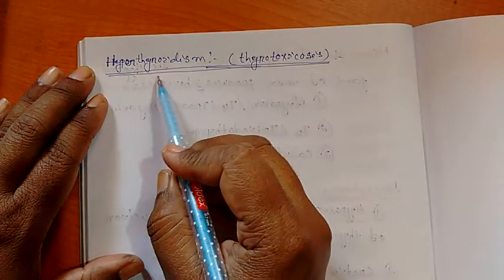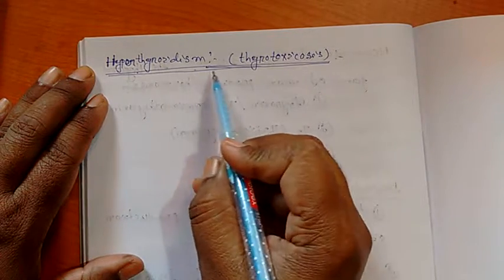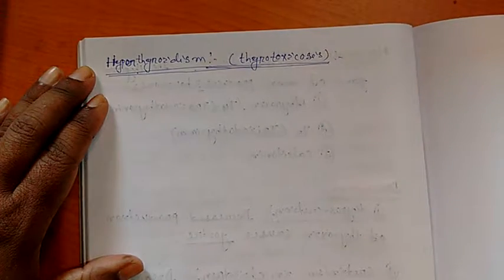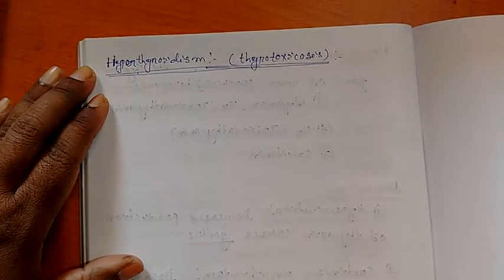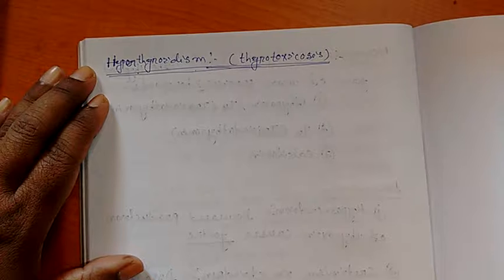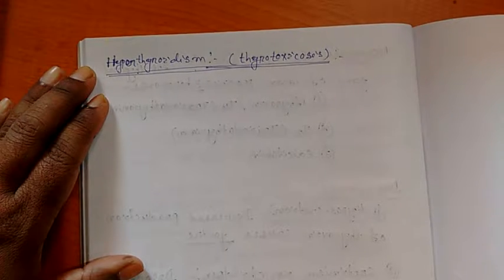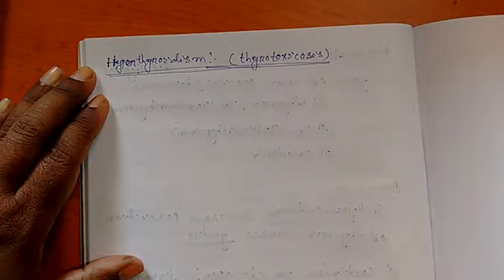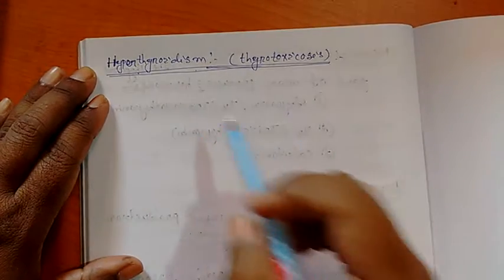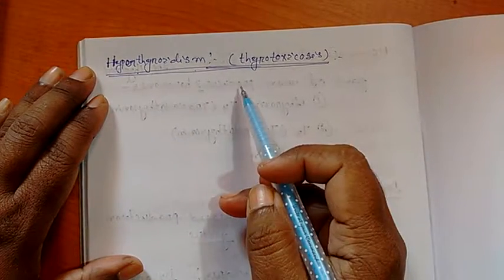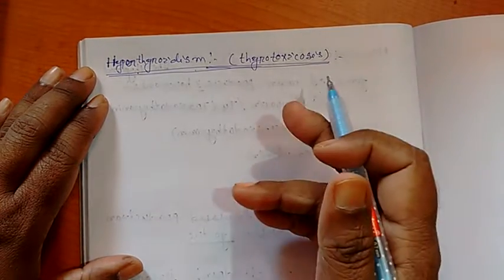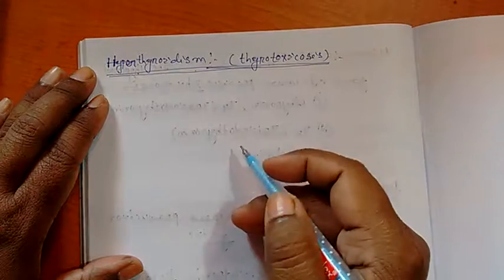Now, let's come to the hyper or excess secretion of thyroid hormone that is thyroxine. It is called as hyperthyroidism or thyrotoxicosis. Now, though thyroid gland is responsible for growth, development, behavior and normal basal metabolic rate, so its excess secretion also increases the rate of growth, basal metabolic rate and the heart rate also.